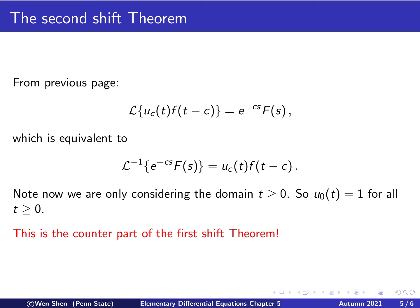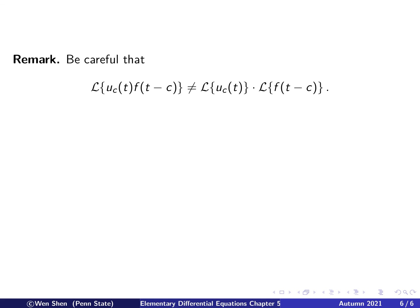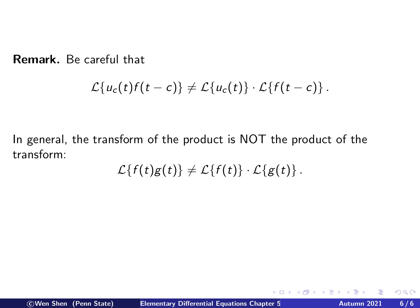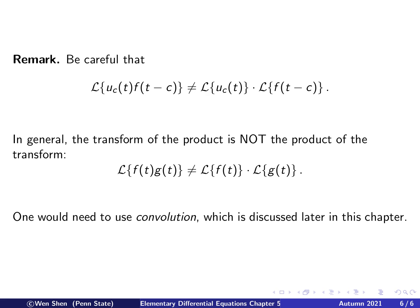A final remark: this theorem is the counterpart of the first shift theorem. I want to show that the Laplace transform of uc of t times f of t minus c does not equal the product of the individual Laplace transforms. This is a general property — the transform of a product does not equal the product of the transforms. For such transforms, we will later learn the concept called convolution, which we'll cover later in this chapter.